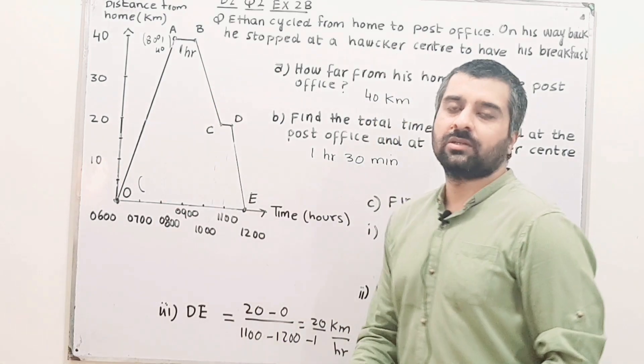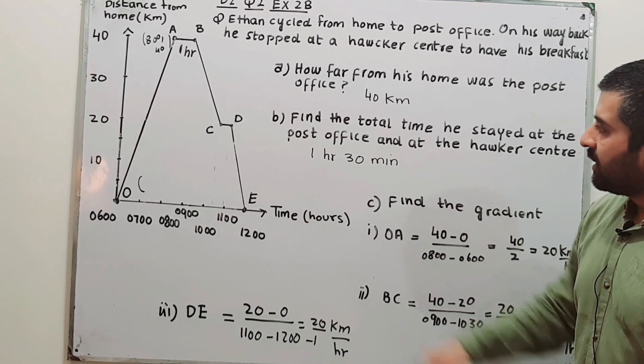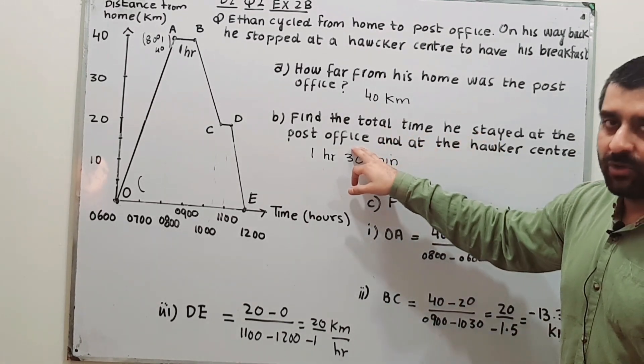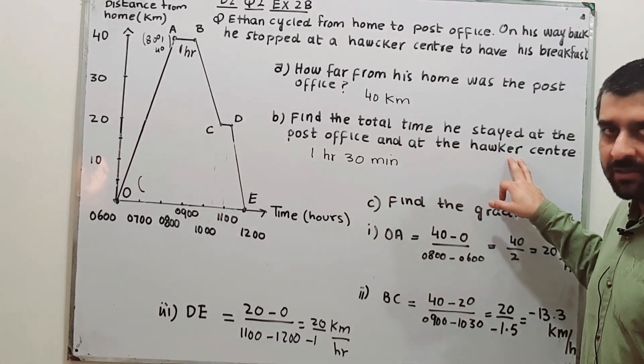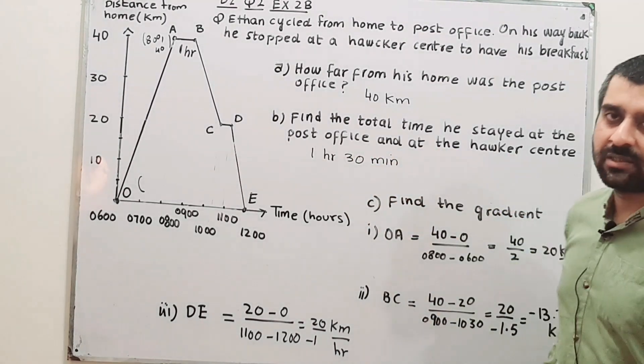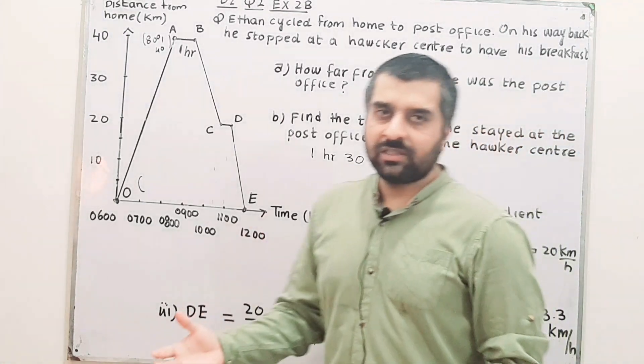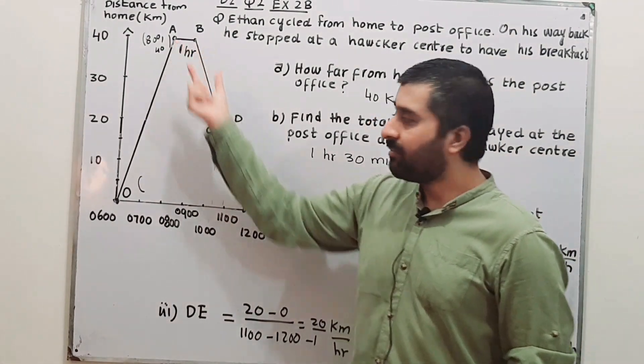So he was 40 km from his home when he was at the post office. Now, find the total time he stayed at the post office and at the hawker center where he had his breakfast. The total time is the sum of the time for section AB and for CD.